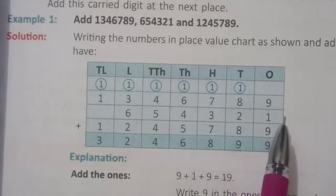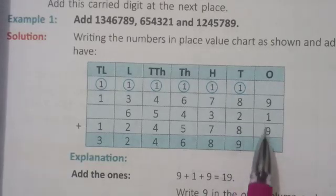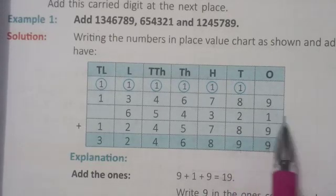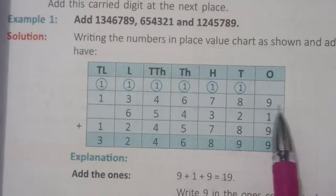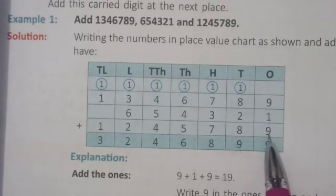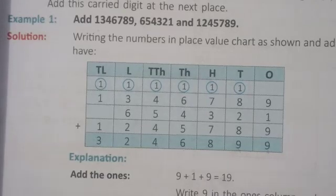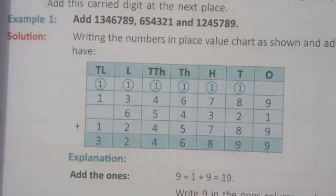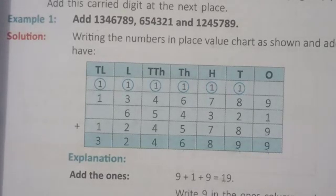So these are large 7-digit numbers and 6-digit numbers which can be added with regrouping and without regrouping. We add with regrouping when we add numbers in the ones and tens digits that exceed 9. This is how we add large numbers.